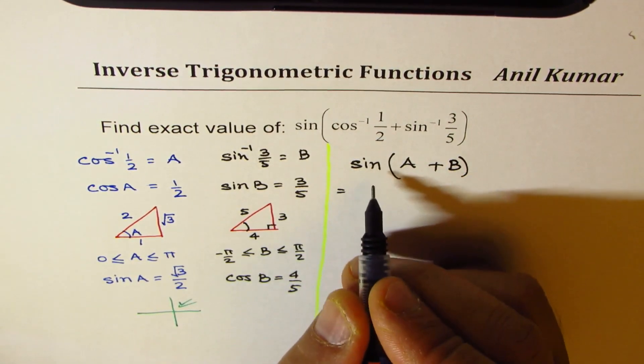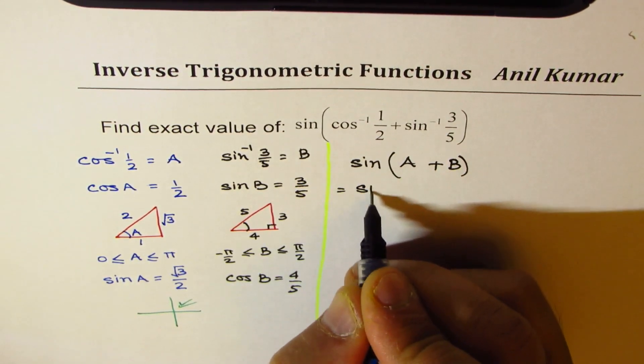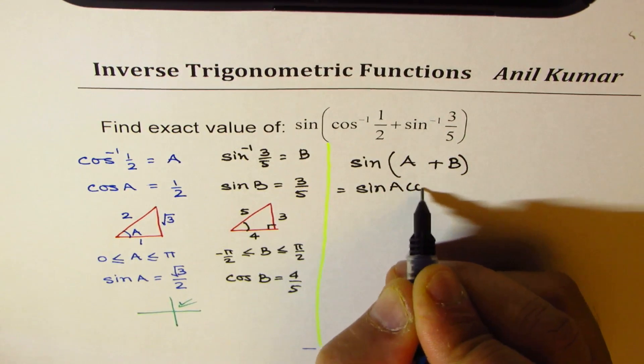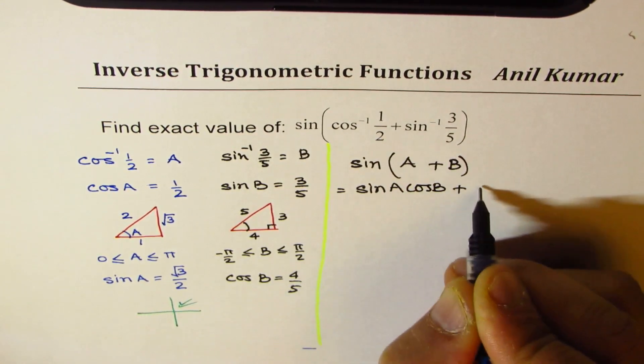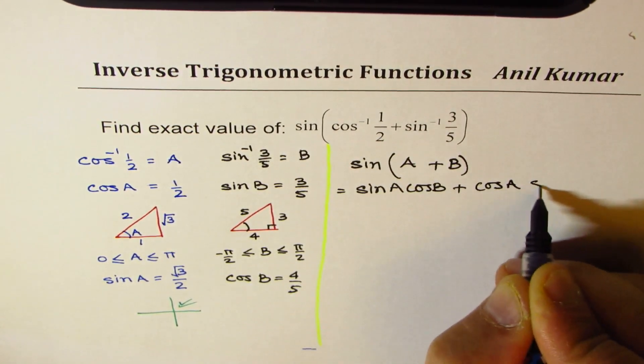We could expand this using compound angle formula. Sine A cos B plus cos A sine B.